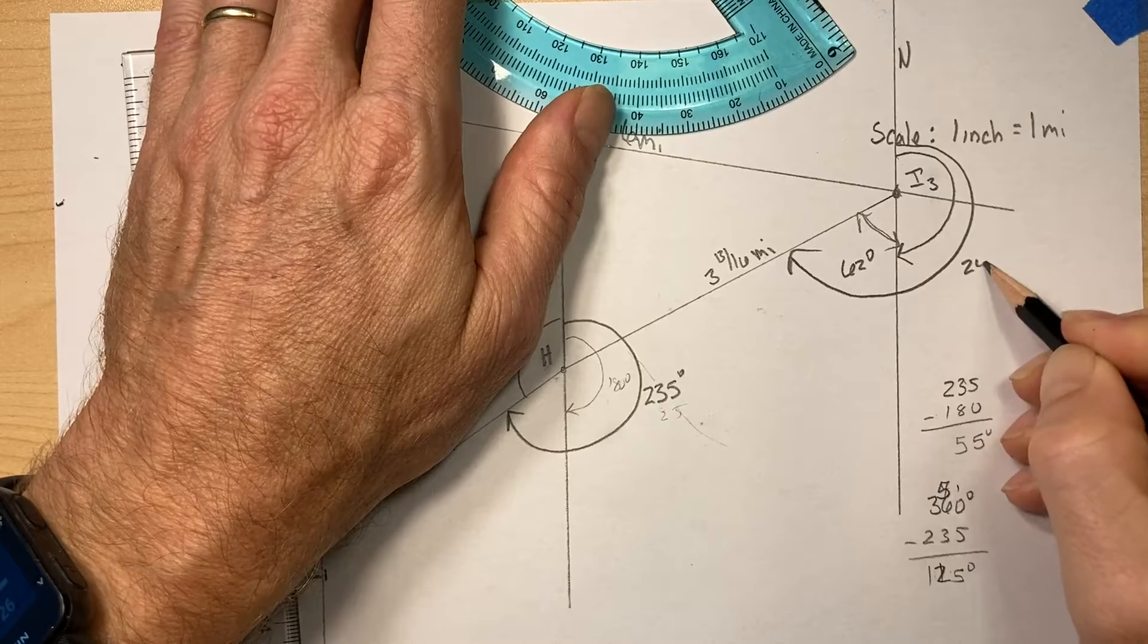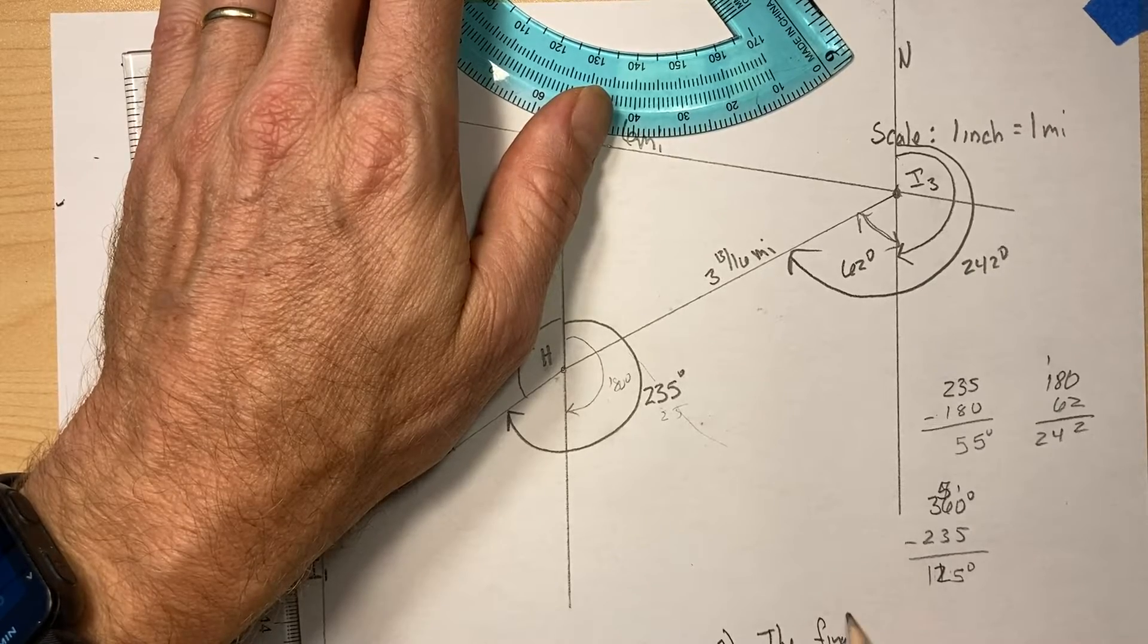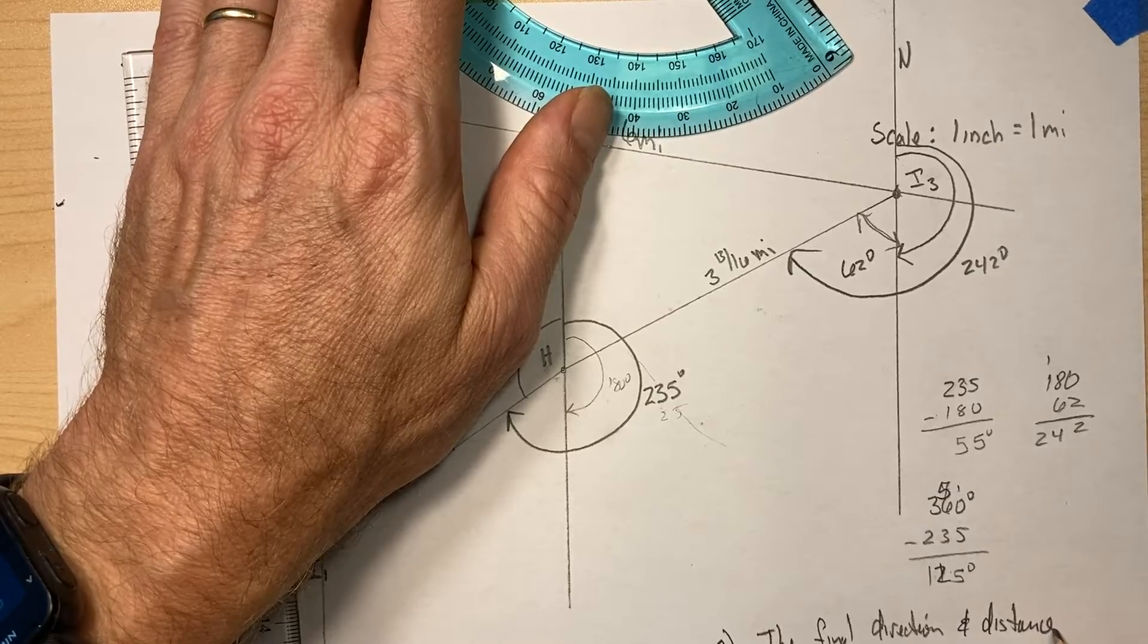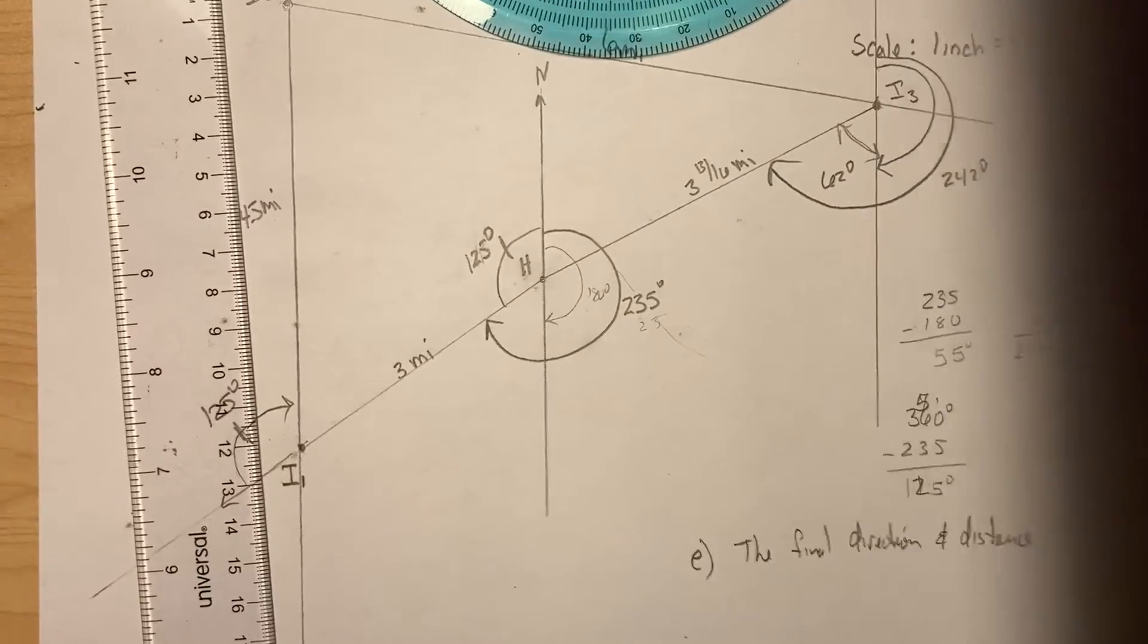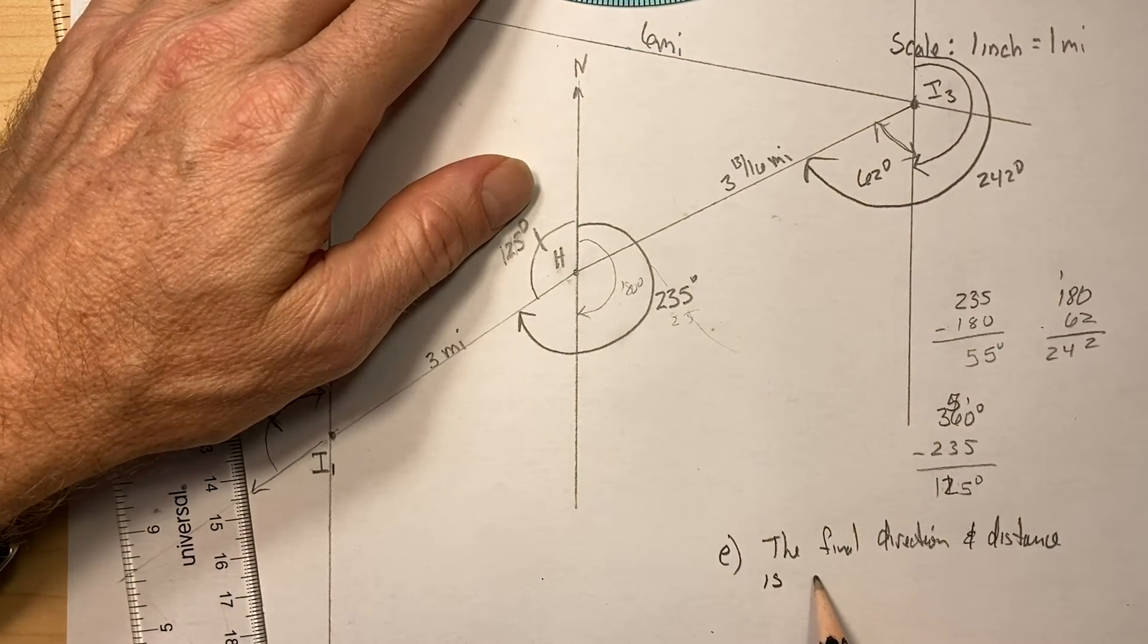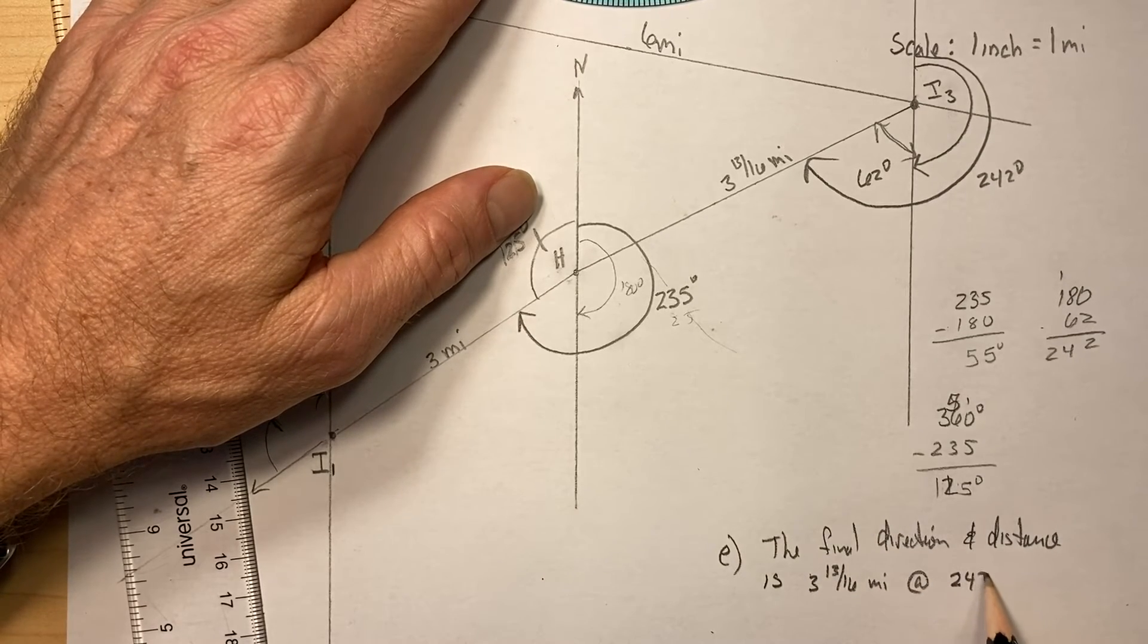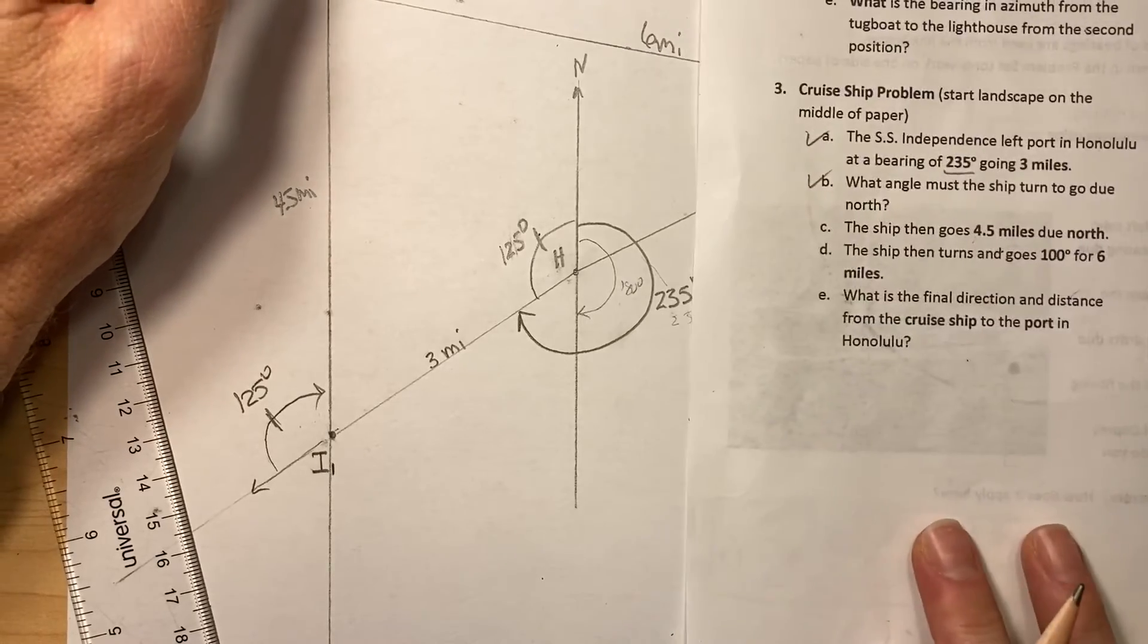So let's label that. 242 degrees. So this is part E, the final direction and distance. Is... let's say the distance is three and thirteen sixteenths miles at 242 degrees. So that is the final answer for the cruise ship problem right there.